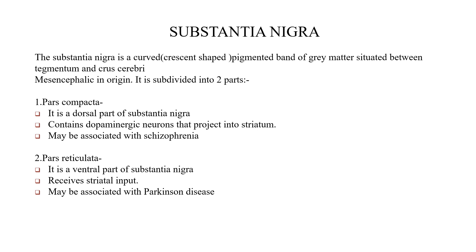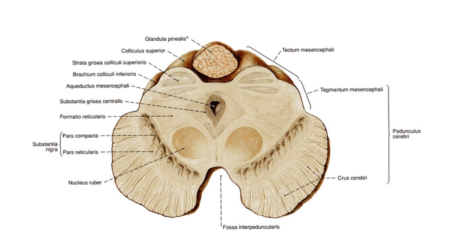The substantia nigra is a curved pigmented band of grey matter situated between the tegmentum and the crus cerebri. It is mesencephalic in origin and divided into two parts: the pars compacta — the dorsal part containing dopaminergic neurons that project to the striatum, possibly associated with schizophrenia — and the pars reticulata — the ventral part that receives striatal input and may be associated with Parkinson's disease.